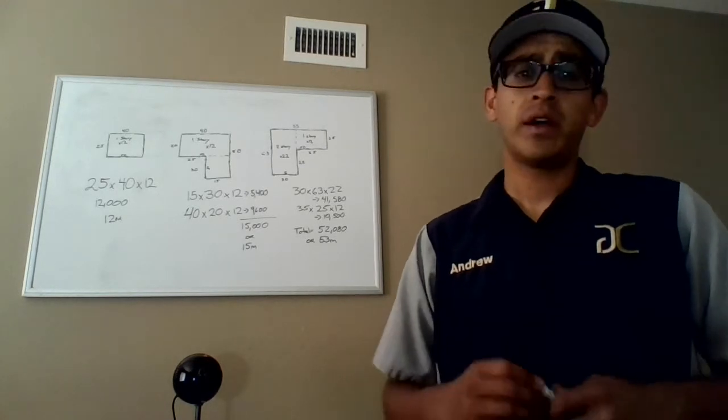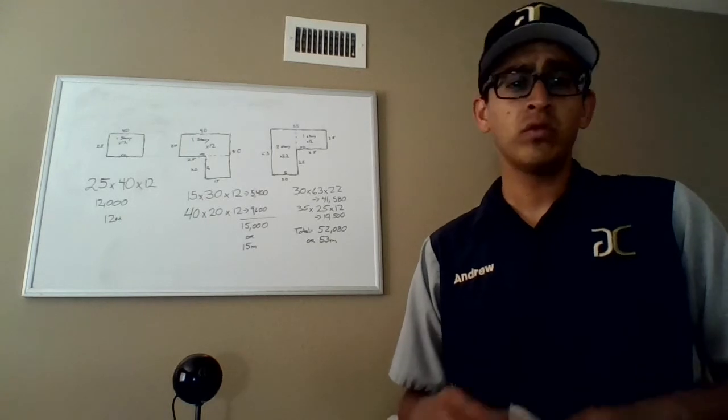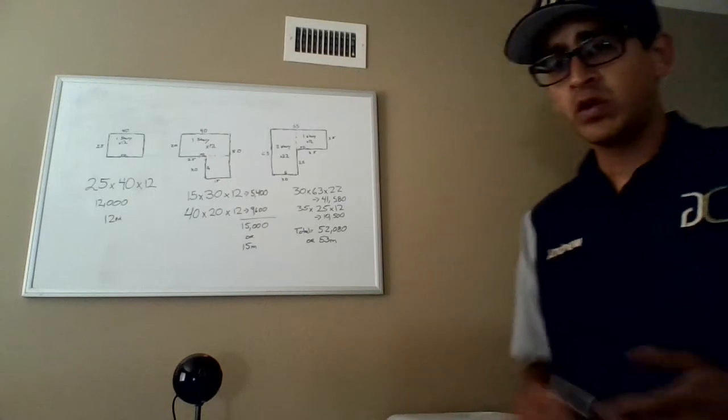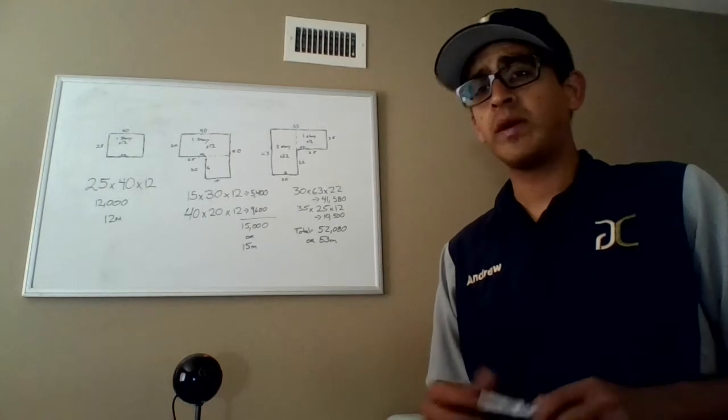But they are pretty basic. So even if you go online or Google it, you'll be able to find them pretty quickly. The first house is going to be the most simple one, which is going to be just a rectangle, a one-story rectangle.